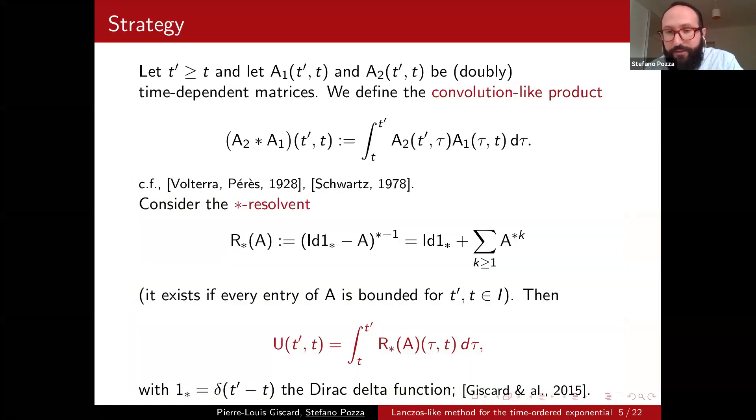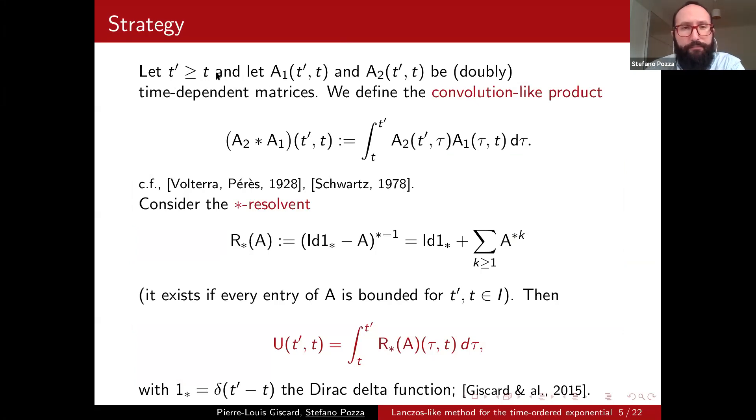So let's introduce what is the general strategy we are going to use. The point for us is instead of working with something that is just depending on one time, we are actually using two times. So now maybe you can see why I was defining U as something depending on two times. If A1 and A2 are two square matrices, then we can define this convolution-like product that we call star product here in this fashion. We have an integration in tau, and as a result, you end up with a new matrix that is depending on two times.